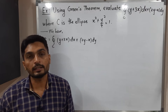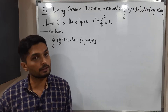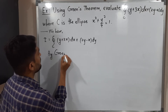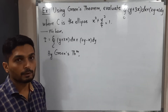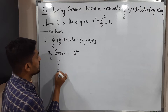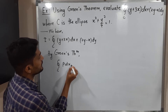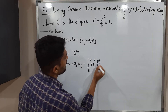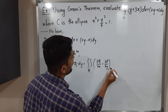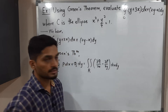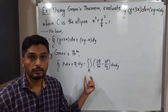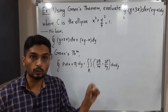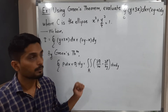We have to solve this line integral using Green's theorem. By Green's theorem, the line integral ∮_C P dx + Q dy equals the double integral over region R of (∂Q/∂x − ∂P/∂y) dx dy. Green's theorem says the value of the line integral over C can be calculated by solving a double integral over region R, which is bounded by the closed curve C.